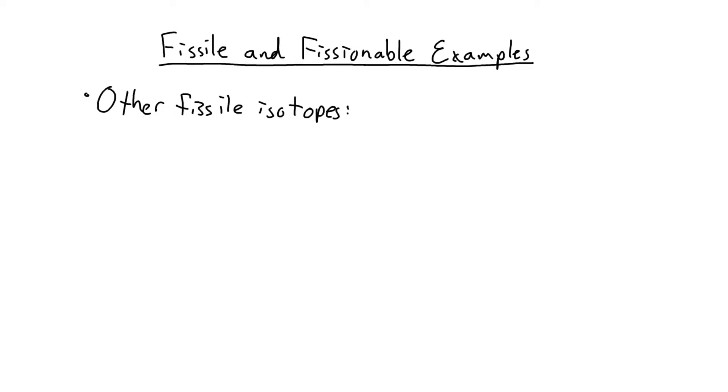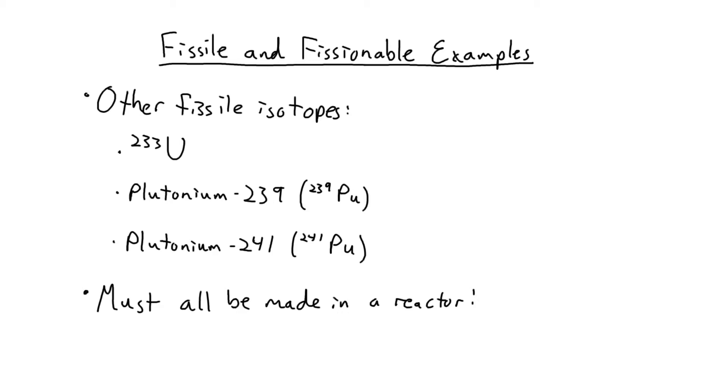Besides U-235, there are only three other known fissile isotopes. Uranium-233, plutonium-239, and plutonium-241. All of which must be made in a reactor. More on that later. Just know that much effort is required to collect significant amounts of fissile material.